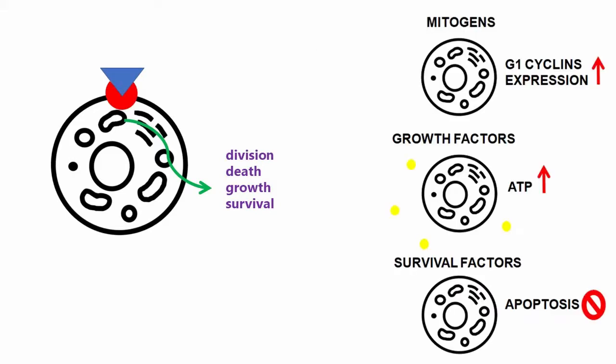There are three major classes of these proteins. Mitogens, which overcome the braking mechanisms caused by APCC by stimulating expression of G1 cyclins, which are resistant to APCC complex, and thus promote entry into cell division.